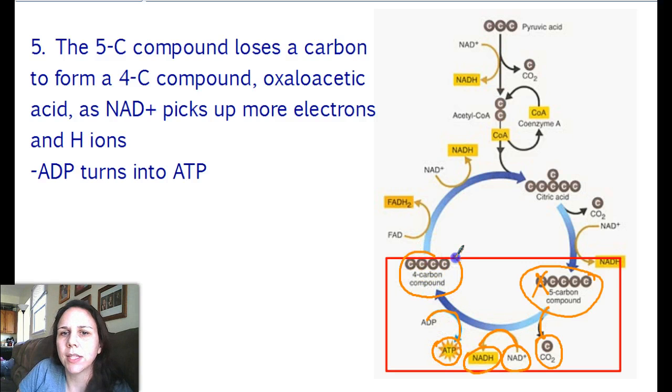And now we have this guy, this little four carbon compound. So five carbon compound loses a carbon right there to form a four carbon compound. NAD comes along, picks up electrons, and ADP comes along, picks up phosphates to make ATP.